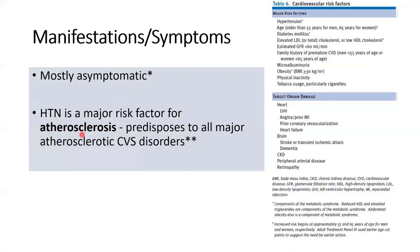However, sustained high blood pressure eventually accelerates atherosclerosis, and this is the main disease-causing component in hypertensives — because it causes all sorts of cardiovascular disorders.